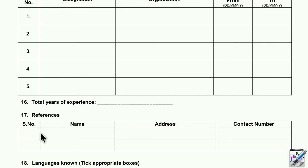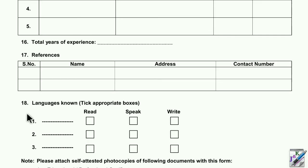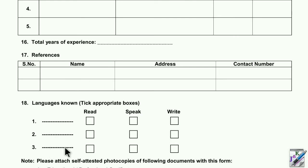For references, you can write the name, address, contact number, and other details. You can write the name — for example, name 18. For language skills, you can write the languages you know — for example, Bangla, English, or Hindi. Write the language in the checkbox. If you know Bangla, you can also write it in English. Then write in the Stretchy Form in English.